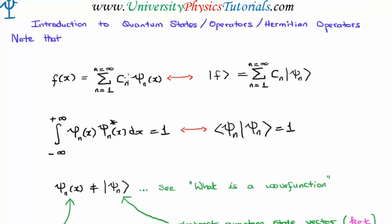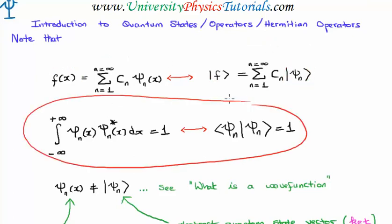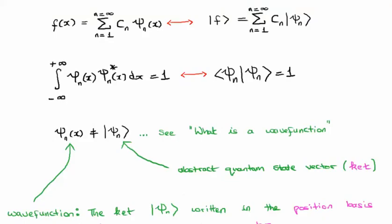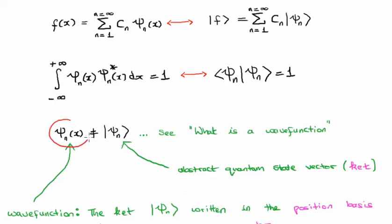Finally, let me introduce some nomenclature. Where we're talking about a summation we can go from functions to quantum states — very straightforward. Something here in terms of the normalization criterion, which is something for future videos. What I'm trying to get at is that psi sub n of x is not equal to the ket psi sub n. In other words, psi sub n of x is actually a wave function, while the ket psi sub n is a ket — and they're not the same thing. I refer you to my video on what a wave function is. The bottom line is that the ket is an abstract quantum state vector, but the wave function is the ket psi sub n written in the eigenstates of the basis of the position operator.